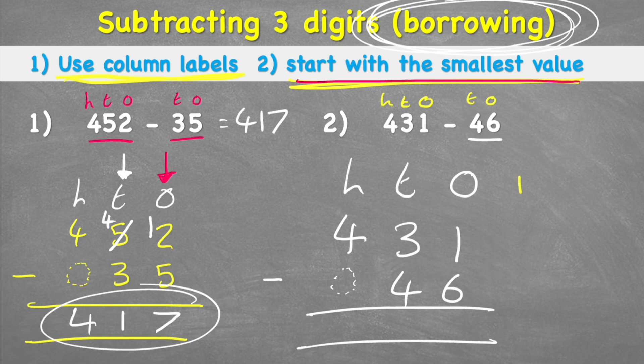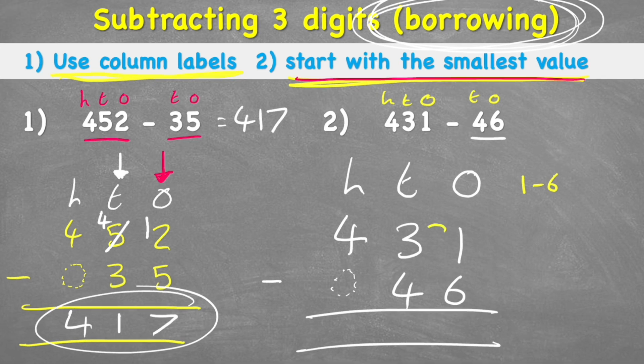First question says 1 subtract 6. Well, again, I cannot do 1 subtract 6, because if I only have 1, I cannot take 6 away. So I'm going to look next door and see this 3, put it down to a 2, and borrow the 1. So I've taken a whole group of 10 away from the 10s and given it to my 1s, turning a 1 into an 11. So now my question says 11 subtract 6, which equals 5.